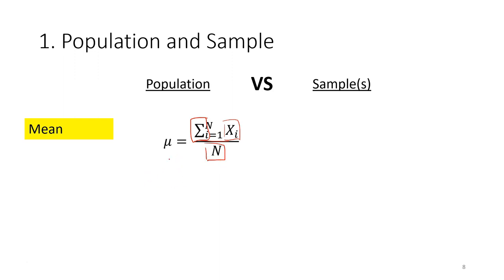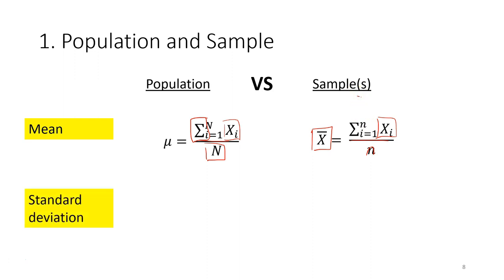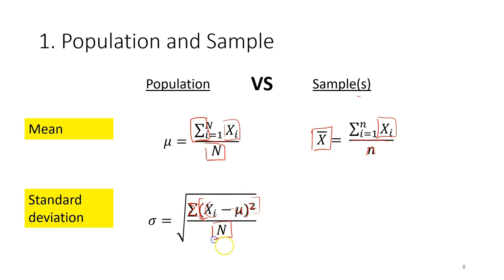The formula for population mean is to sum up the value of all observations and divide by the number of observations. For sample mean — x-bar — the calculation is the same: sum all observations and divide by the number of observations in the sample. For standard deviation, we calculate the sum of squares — each observation minus the mean, squared, then summed — then divide by the total number of observations N, and take the square root.